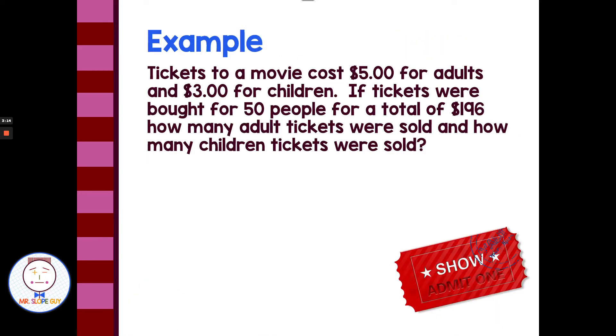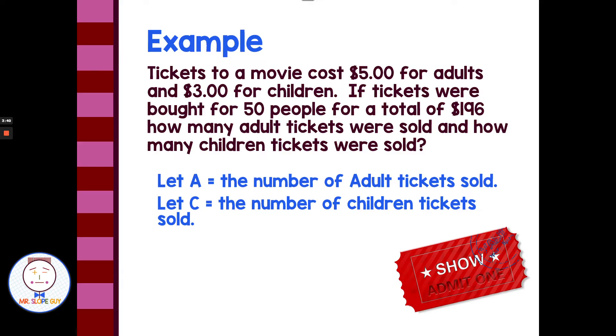So let's say we have tickets to a movie that costs $5 for adults and $3 for children. If tickets were bought for 50 people for a total of $196, how many adult tickets were sold and how many children tickets were sold? So the first thing we need to do is identify our two variables. The two variables we're talking about are adult tickets and children tickets. So we can let A equal the number of adult tickets and C equal the number of children tickets.